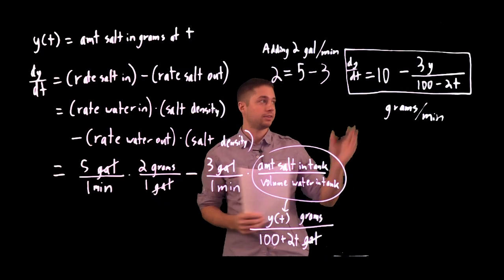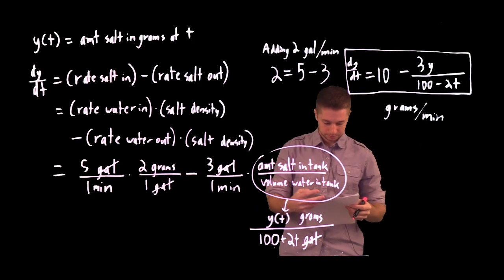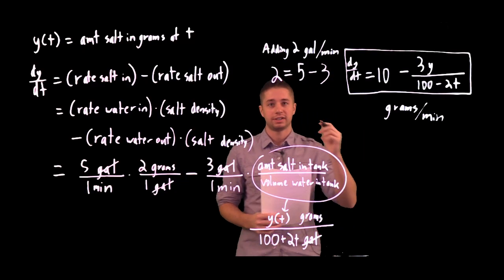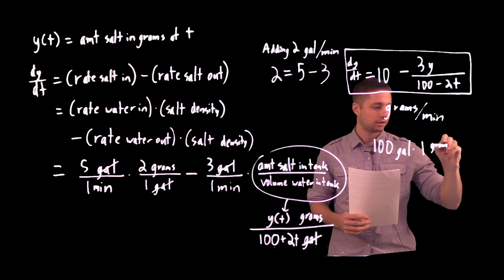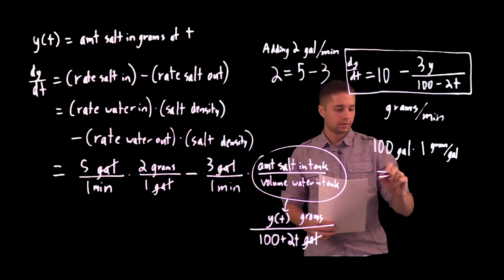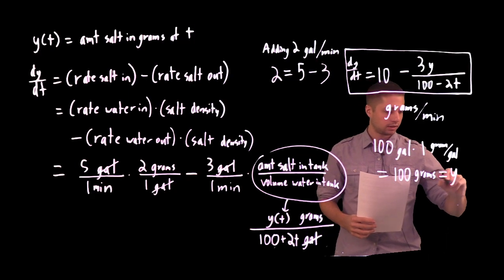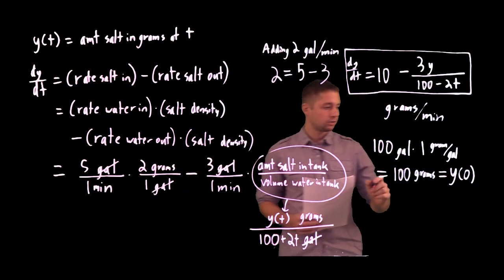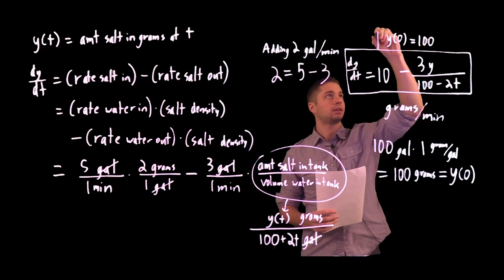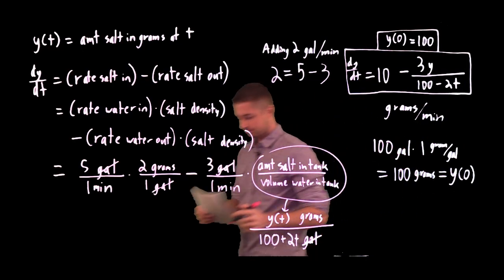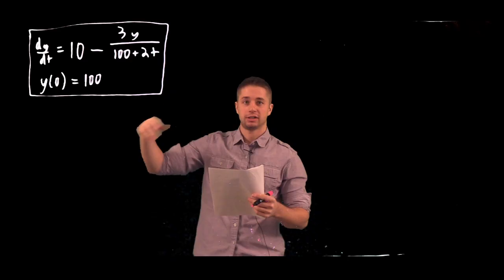If we have an initial condition to go with this differential equation, we have an initial value problem. Initially there are 100 gallons of water at a concentration of 1 gram per gallon of salt, which equals 100 grams of salt at time t equals 0. So y(0) = 100 is our initial condition, giving us a complete initial value problem.